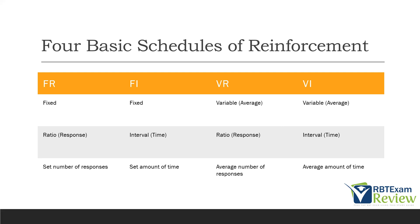The R stands for ratio or response; the I stands for interval or time. The F stands for fixed, and the V stands for variable. Understand this chart and you'll never mix these up. Once we go over each individual one, this chart should be your guide — it's a very easy way to remember all four.